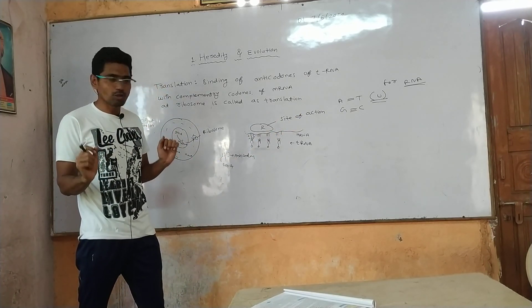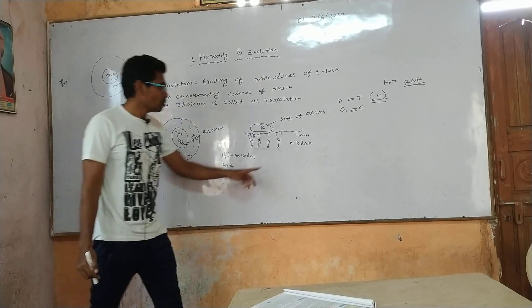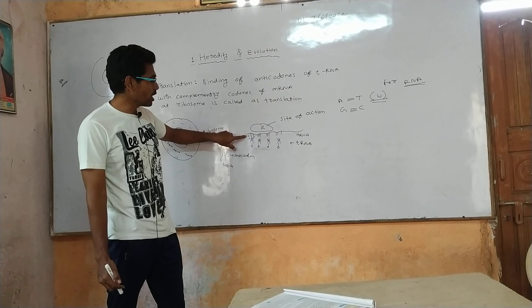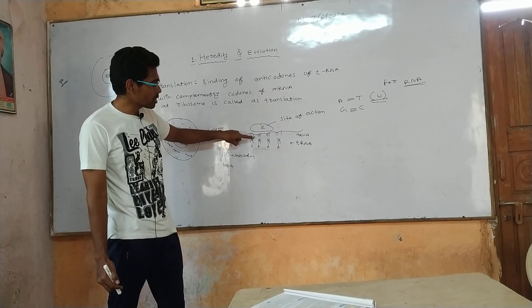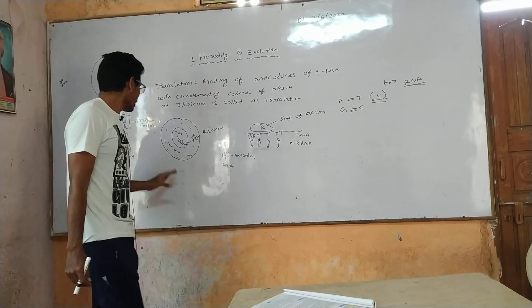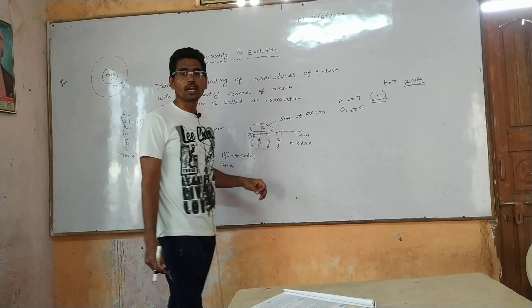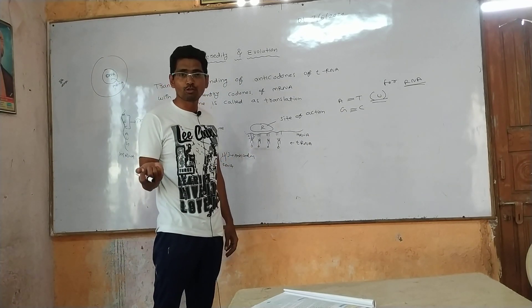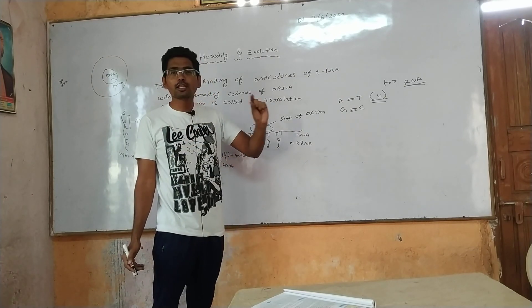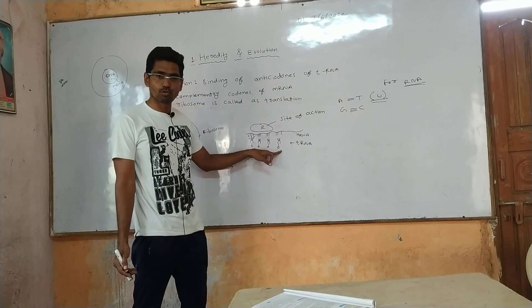At that location, the codon and anticodon meet. In the ribosome in the cytoplasm, there is already tRNA. The tRNA has anticodons. The amino acids form a sequence, and the sequence of amino acids makes a protein.